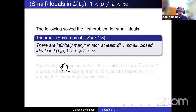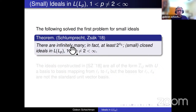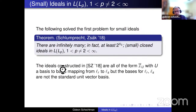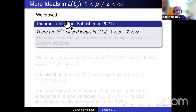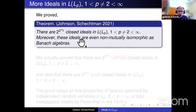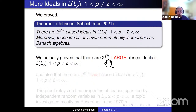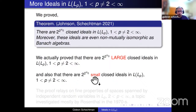The first recent result in this direction is a theorem of Schlumprecht and Zsák, who proved that there is a continuum of small closed ideals in L(Lp). The more recent result is the theorem of Bill Johnson and myself: there are exactly 2^continuum closed ideals in L(Lp) in the reflexive range — no more and no less. Moreover, these ideals are mutually non-isomorphic as Banach algebras, and we actually prove there are 2^continuum large closed ideals and also 2^continuum small closed ideals.